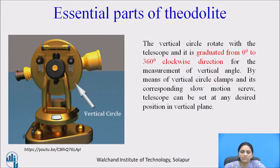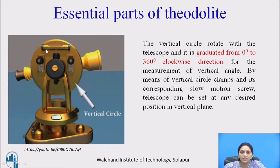The next part of the theodolite is the vertical circle. You can see the vertical circle in the image. The vertical circle rotates with the telescope and is graduated from 0 degrees to 360 degrees in a clockwise direction for the measurement of vertical angle. By means of the vertical circle, clamps, and its corresponding slow motion screw, the telescope can be set at any desired position in a vertical plane.